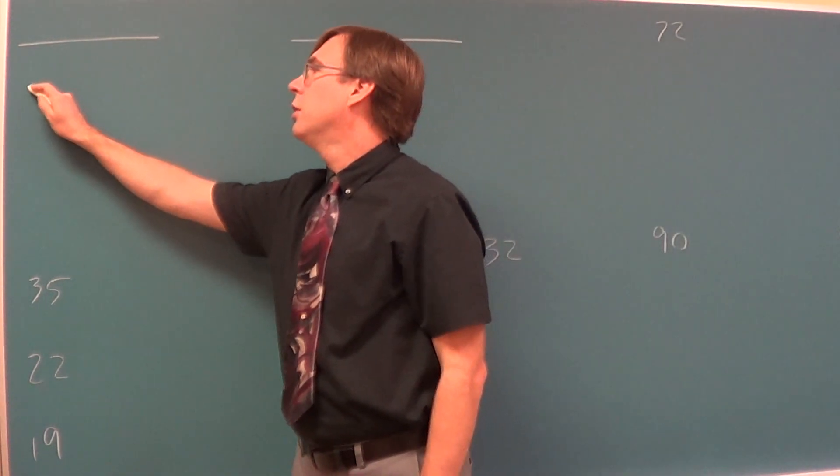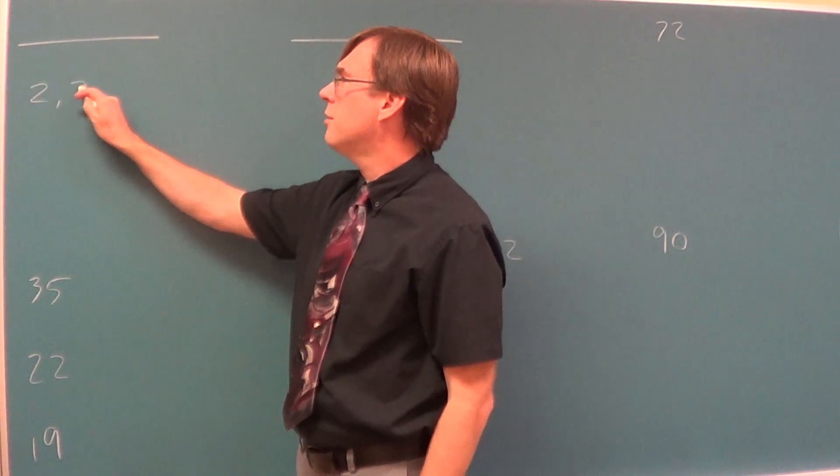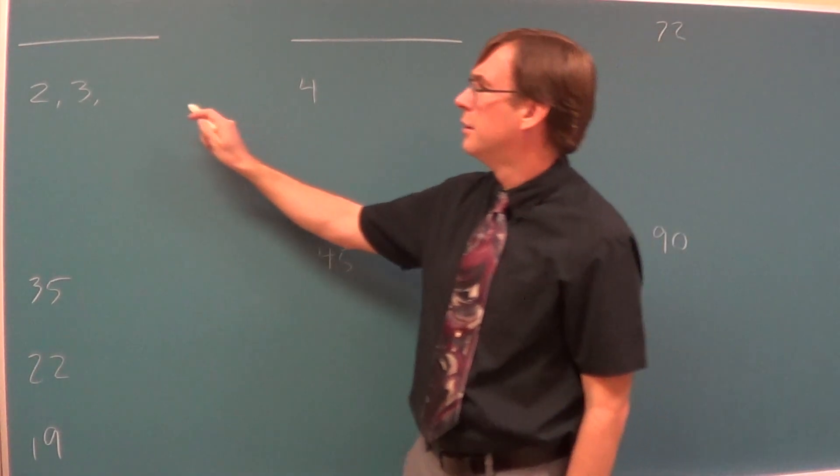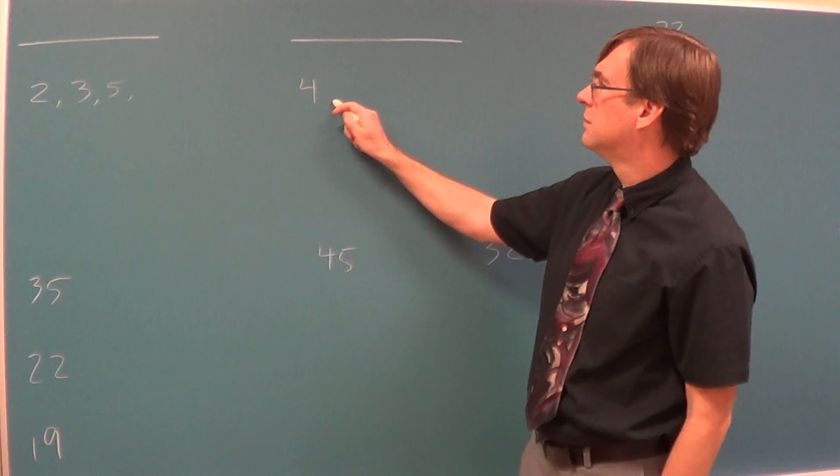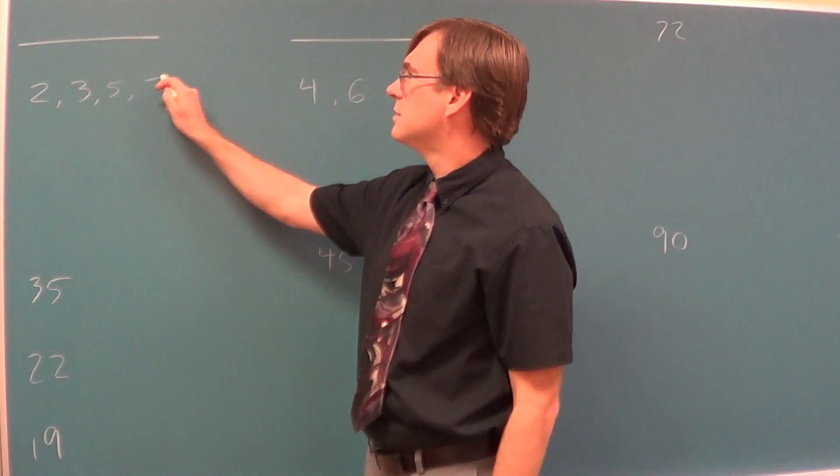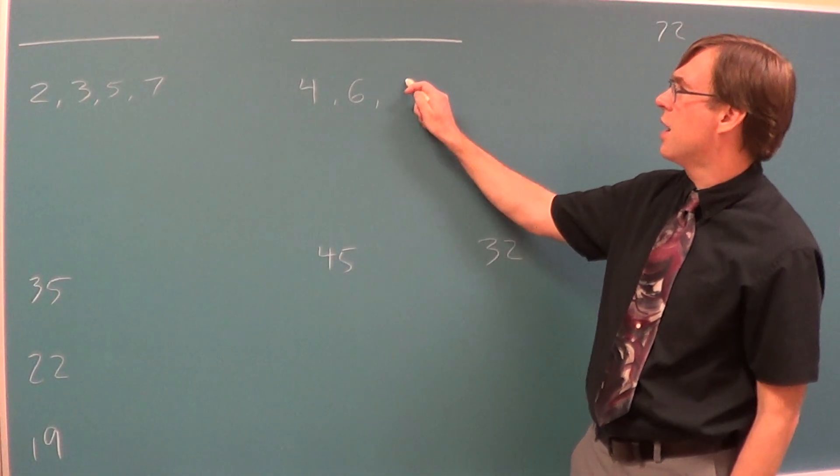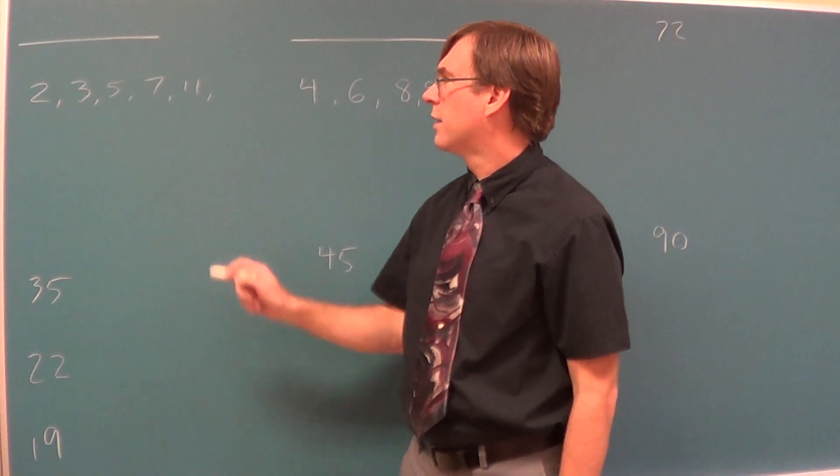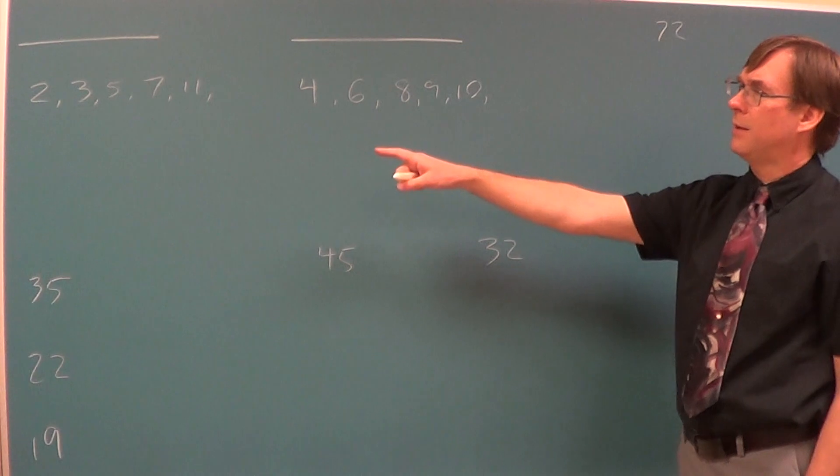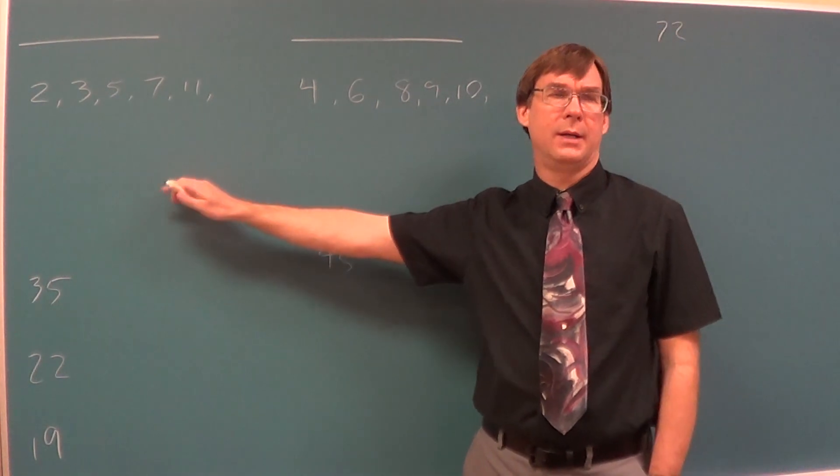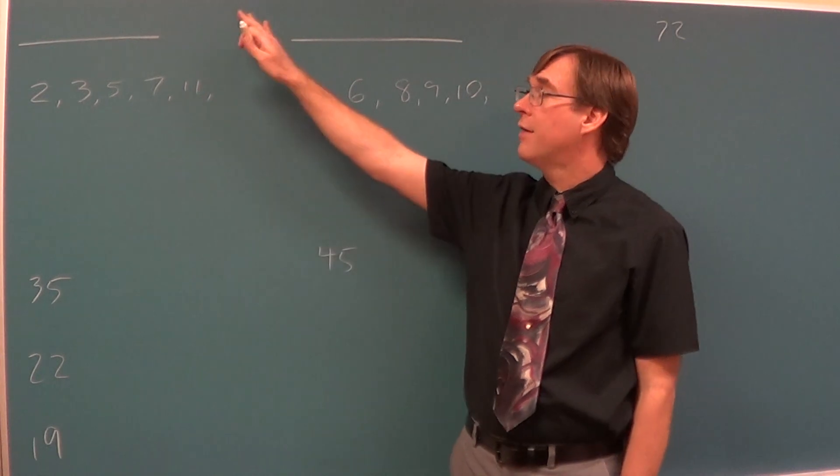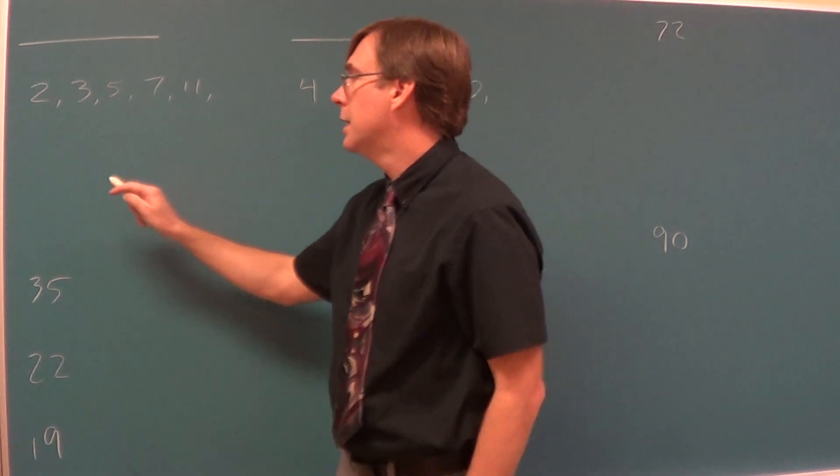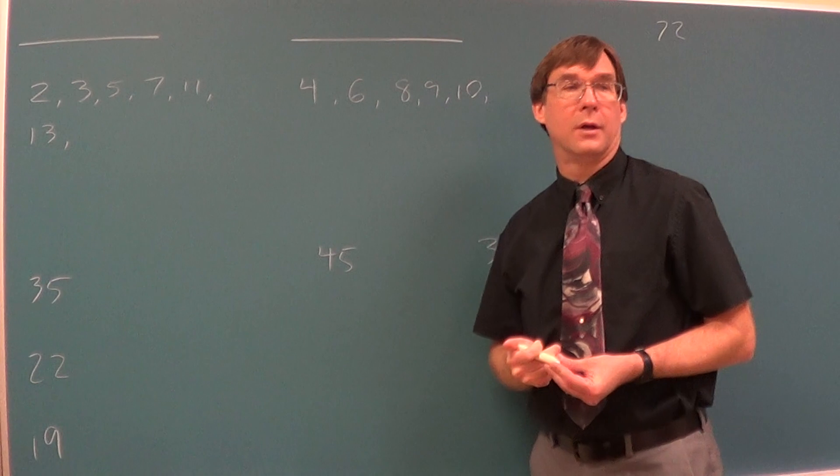So two is this type of number, three is this type of number, but four is that type of number. Five is this, six is that, seven is this, but I'm not just taking turns because eight, nine, and ten go over here. Eleven is back there. Can anybody make a guess of what my next number is? Thirteen is next. Twelve? Twelve is going to be in this club.